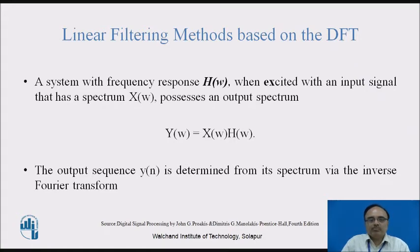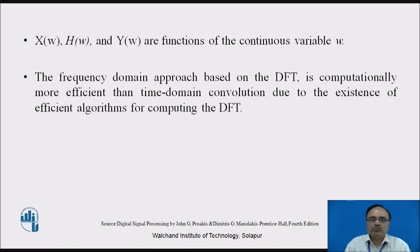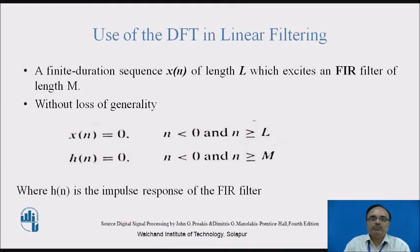Now let us see the application for linear filtering — how exactly the discrete Fourier transform and circular convolution can be combined to give a result equivalent to linear convolution. If H(ω) is the frequency response and Y(ω) is the output spectrum, and X(ω) is the input spectrum, then Y(ω) = X(ω)·H(ω). In the frequency domain this calculation is more efficient than time-domain convolution, due to efficient algorithms for computing the discrete Fourier transform.